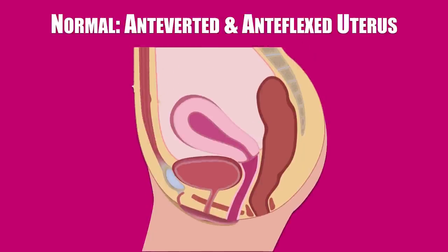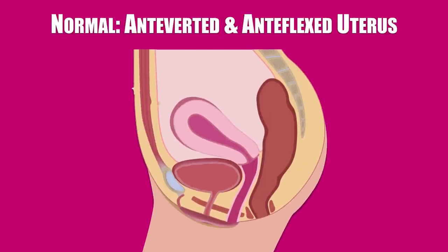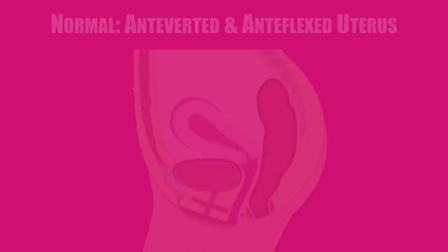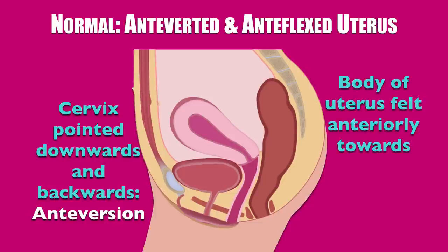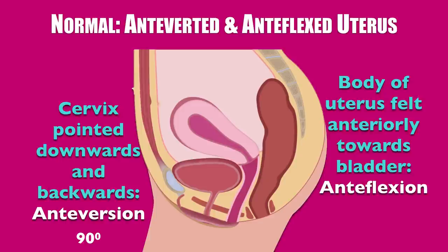First, I will talk about the normal antiverted, antiflexed position of the uterus. This diagram illustrates the so-called normal position of the genital tract. Typically, the uterus and the cervix lie in the antiverted and antiflexed position. When one does a bimanual examination, if the cervix is pointed downwards and backwards — that is, the external os is towards the sacrum — it is referred to as the antiverted position, and if the body of the uterus is felt towards the bladder, it is called antiflexion. The angle of version is normally 90 degrees and the flexion angle is approximately 120 to 150 degrees.